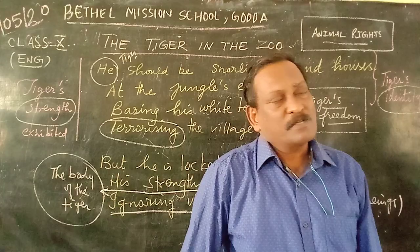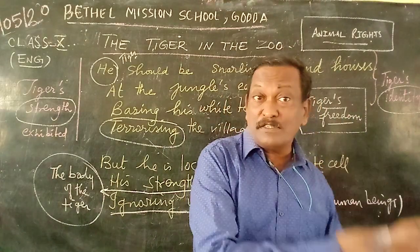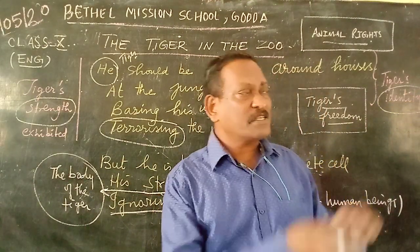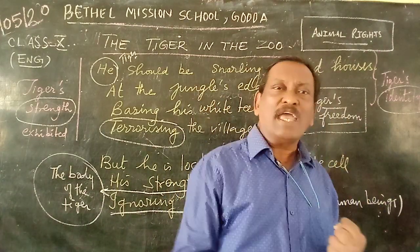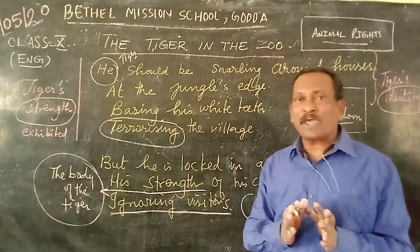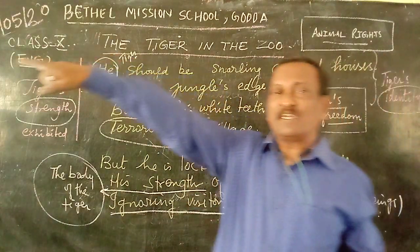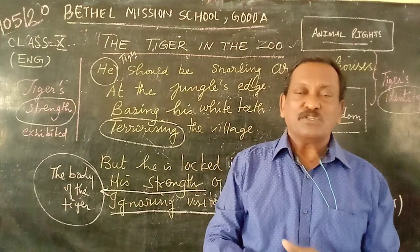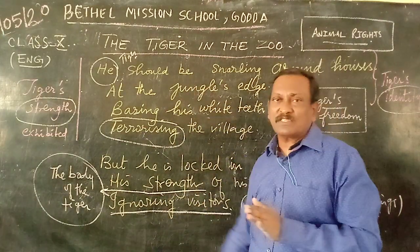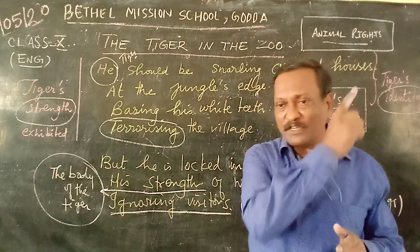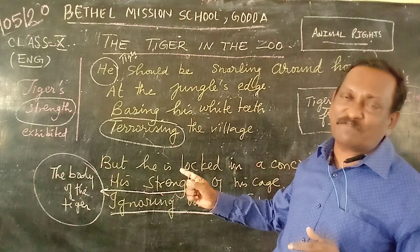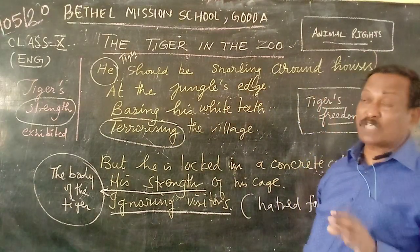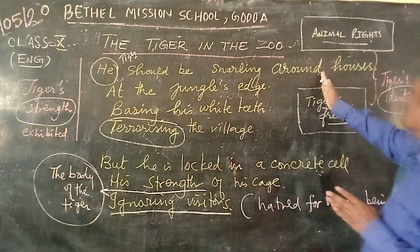Why does the poet use the word 'houses'? Sometimes the tiger runs out of prey in the jungle — he is unable to find any game or any kind of prey. Therefore, he slowly walks until he reaches the boundary of the jungle where he finds a small village. At the edge of the jungle, he finds houses, and so the tiger moves along the border of the jungle. He moves into the village sometimes and makes a terrific, frightful, snarling sound.